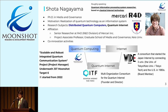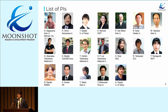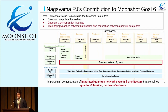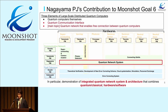I'm directing the quantum internet consortium named Quantum Internet Task Force. This is a list of our PIs — I cannot give comment to everyone, but I'm very grateful for their hard work. Our contribution to the Moonshot project is to make the quantum network system, in particular the demonstration of an integrated quantum network system and architecture that combines quantum and classical, hardware and software — everything. We already have begun collaboration with Professor Yamamoto and Professor Takahashi.